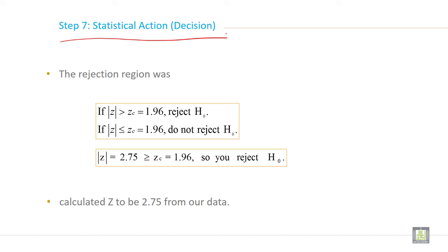The rejection region was if Z critical is greater than Z calculated, or if Z calculated is greater than 1.96, reject null hypothesis, otherwise accept it. So calculated Z is 2.75 while the critical Z value is 1.96.